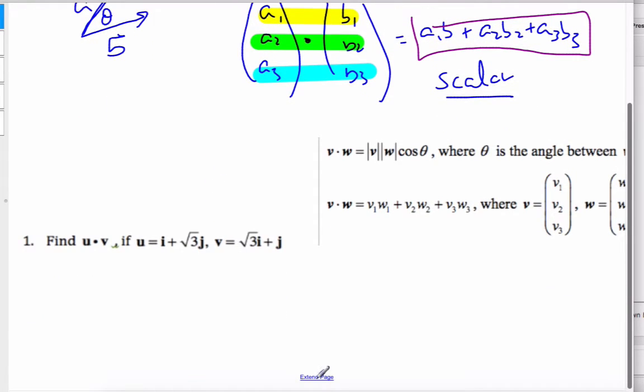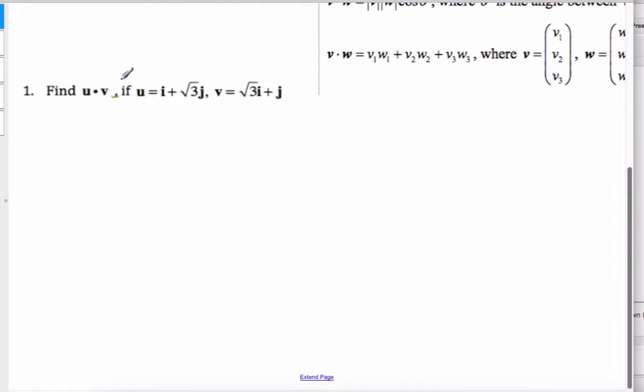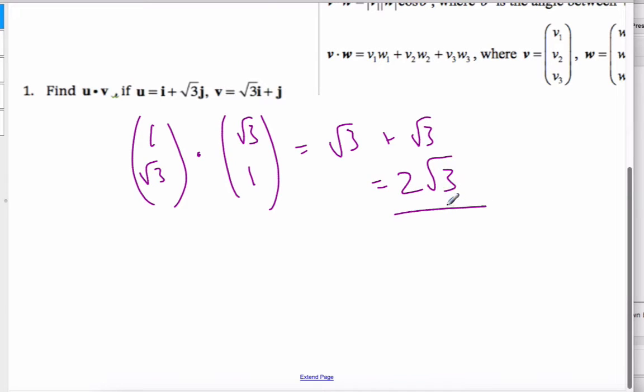It works in two dimensions and three dimensions. Looking at these two, if I want to find U dot V, I like to write them out in columns so that I can easily read them better. Here are my two vectors. If I dot them, I go 1 times root 3 is root 3 plus root 3 times 1 is root 3, which gives me 2 root 3, a scalar. That's as simple as a dot product is.